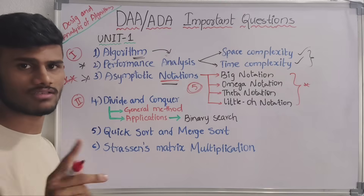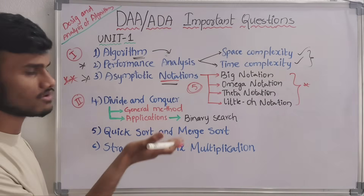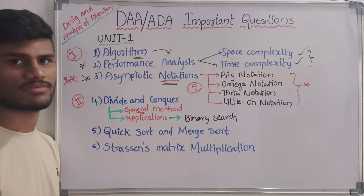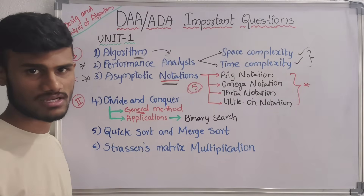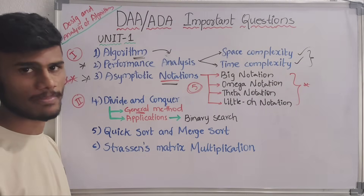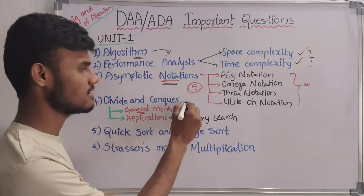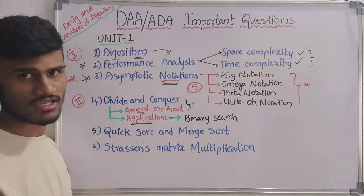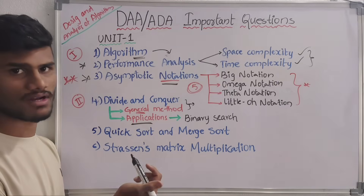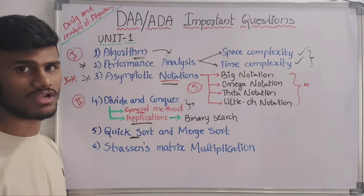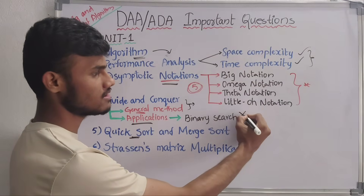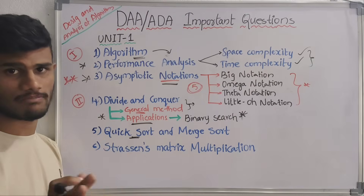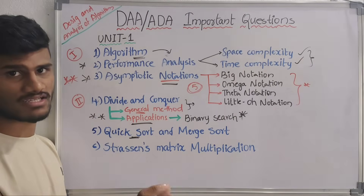Next coming to our second part. In the second part we have three topics: divide and conquer general method — maximum 2 marks, maximum 5 marks can be added. Then coming to applications of divide and conquer method, we have three applications: binary search, quicksort, and mergesort. This is the application — very very important questions.